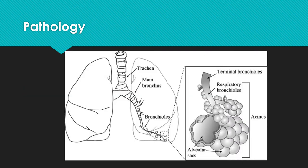Looking at the anatomy of the lung and breaking it down into its functional components — the acini — you can see the alveolar sacs where gas exchange occurs. In the emphysema component, you see destruction of those alveolar sac walls, so recoil is affected, you get a higher residual volume, and gas exchange is completely affected. You also get narrowing of the small airways due to goblet cell hyperplasia and increased mucus.